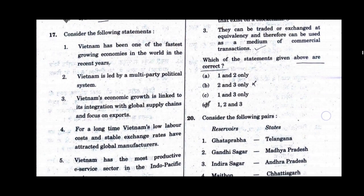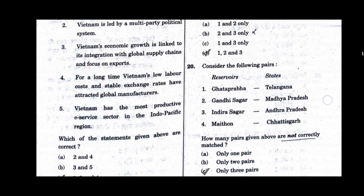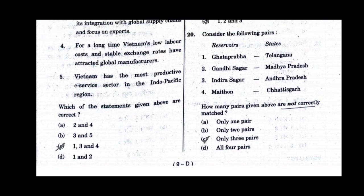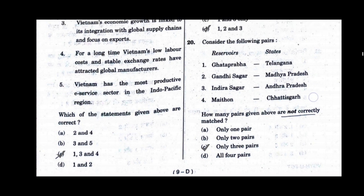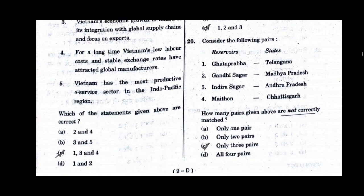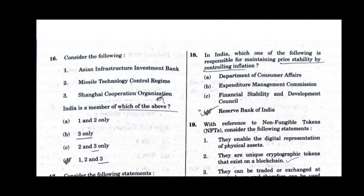Question number 17. Consider the following statements. Which of the statements given above are correct? Statements 1, 3 and 4 will be the correct statements for question number 17. Option C will be the correct answer. Question number 18. In India, which one of the following is responsible for maintaining price stability by controlling inflation? Option D will be the correct answer: Reserve Bank of India.